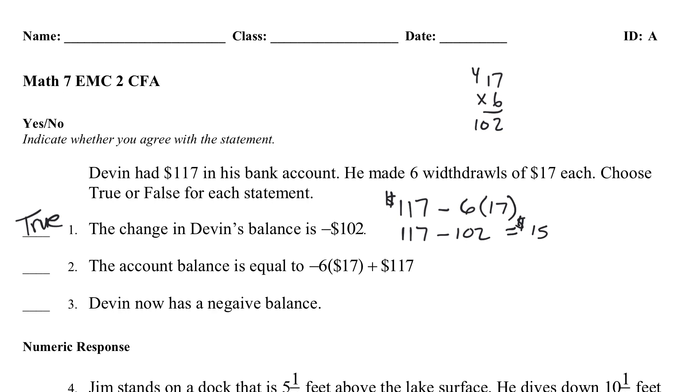Next, the account balance is equal to negative 6 times 17 plus $117. You know what? That's exactly what I think it would be. What they did here is they have it switched. We have $117 right here. And we have negative 6 times 17 right here. The order's just turned around. But you would still get the same thing. So, that is true as well.